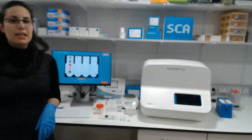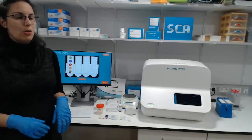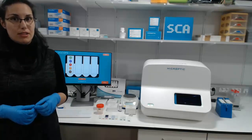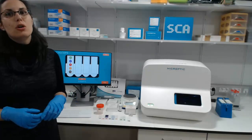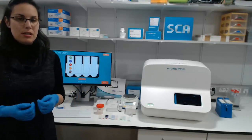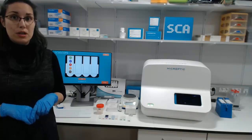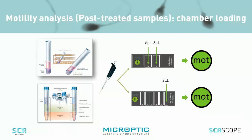For laboratories that are also doing sample treatments, it is important to know that the SCA scope also helps analyze post-treated samples and evaluate the percentage of hyperactive sperms. To do that, we will use counting chambers with a depth of 20 microns. This is important because we normally use chambers of 10 microns depth for evaluating fresh semen samples, but when sperms are treated and activated, they need more space for swimming freely and therefore require a deeper 20-micron chamber.